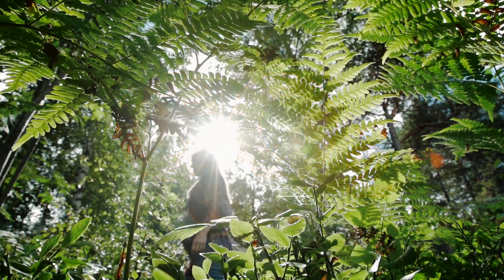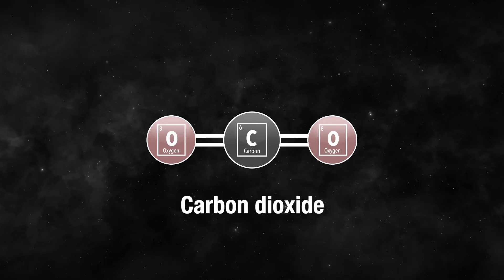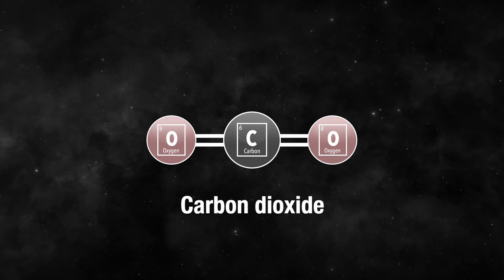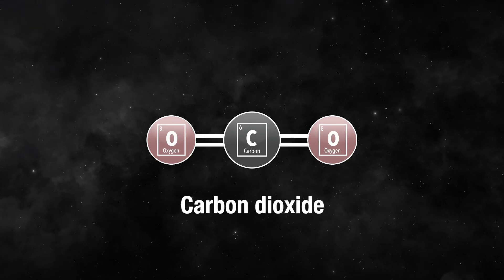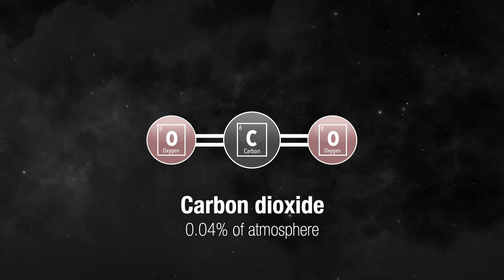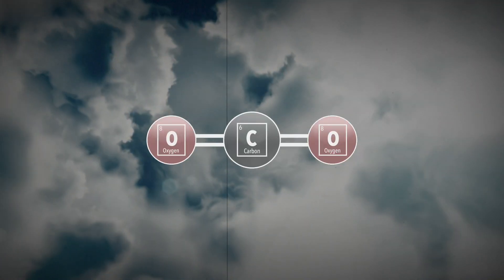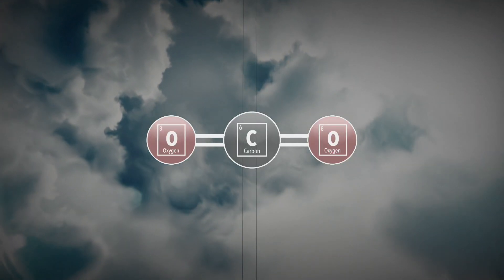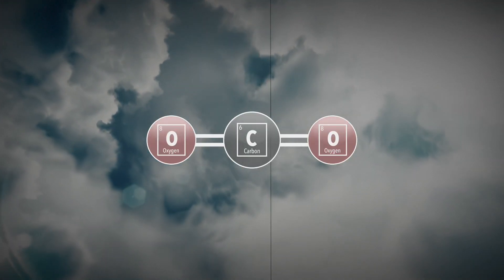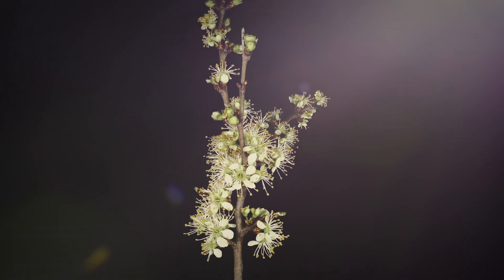Carbon dioxide is a gas made up of one carbon atom and two oxygen atoms. The amount of carbon dioxide in the atmosphere is actually pretty low — only 0.04% — but it plays an important role in many chemical processes. This small molecule, carbon dioxide, is actually what becomes the foundation for the plant and ultimately everything else alive.